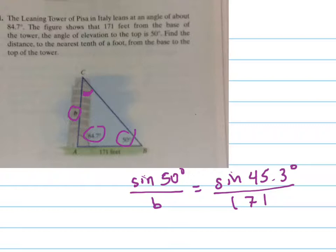Alright, when we do our cross multiplying and our dividing we're going to get that B equals the sine of 50 degrees times 171 all over the sine of 45.3 degrees.